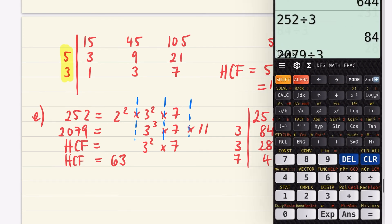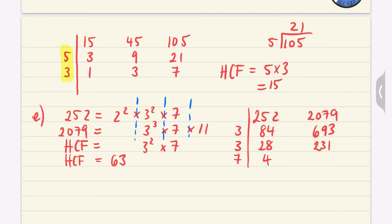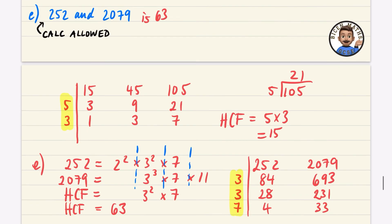It's harder to spot, but both are divisible by 7: 28 ÷ 7 = 4 and 231 ÷ 7 = 33. Since 4 and 33 have no more common factors, the highest common factor is 3 × 3 × 7 = 63.